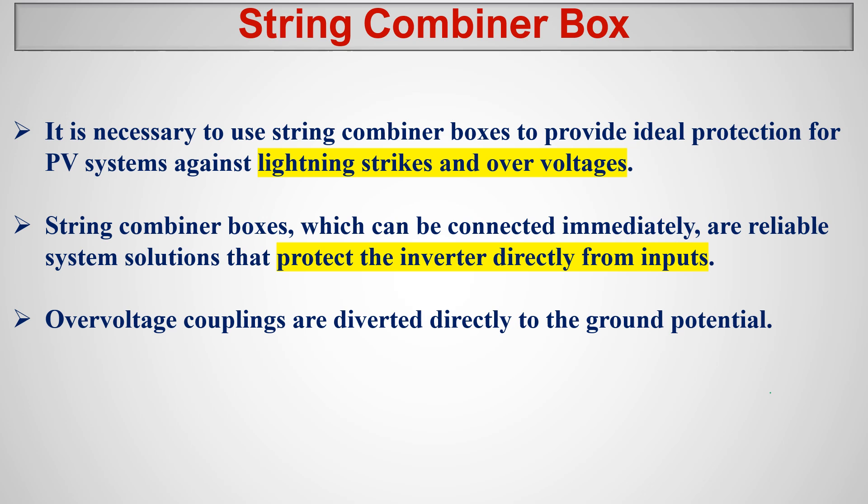It is necessary to use string combiner boxes to provide ideal protection for the PV system against lightning strikes and over-voltage. String combiner boxes can be connected as a reliable system solution to protect the inverter directly. After the string combiner box, the next appliance is the inverter, so the inverter should not suddenly receive a high current or high voltage — if that happens, the inverter will fail.